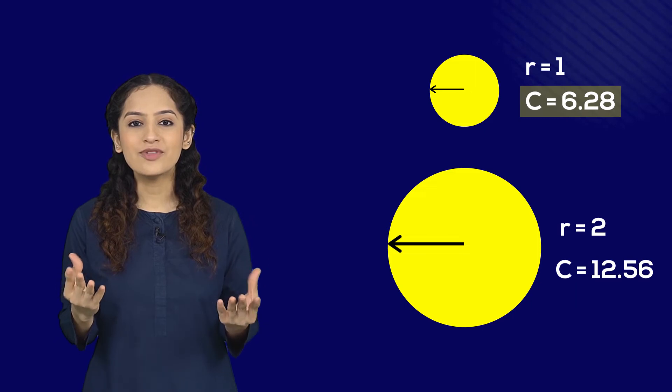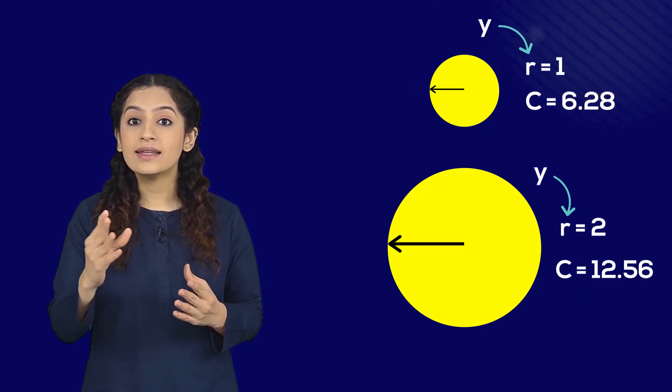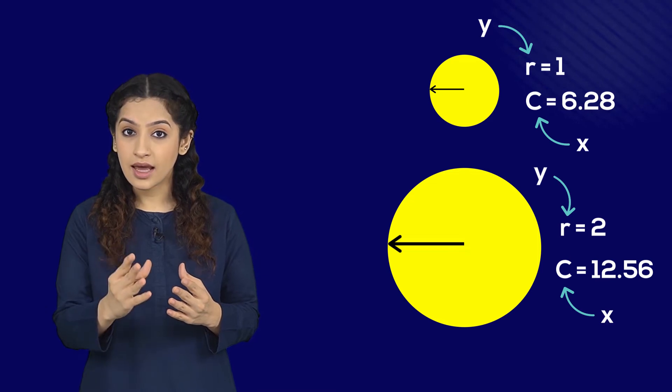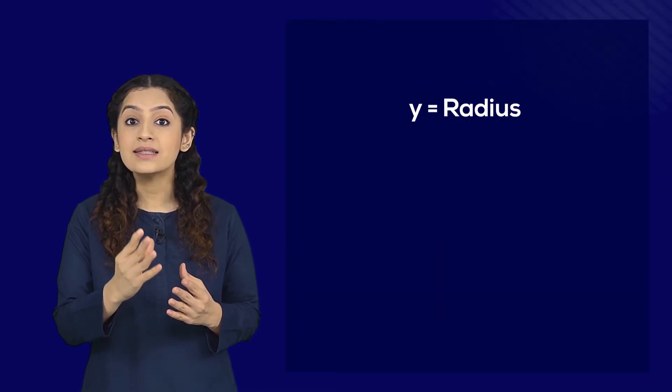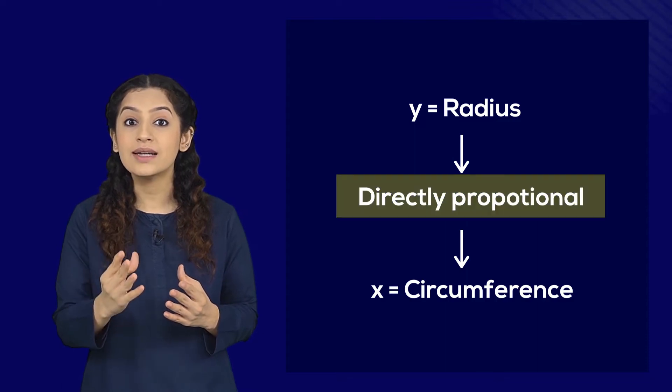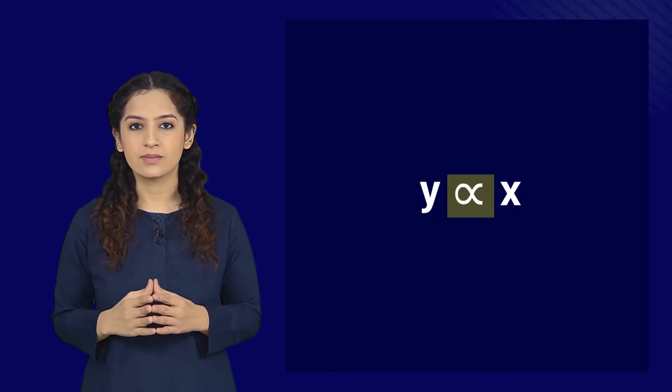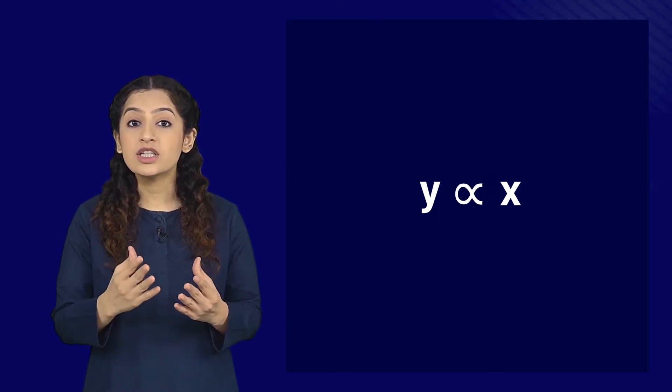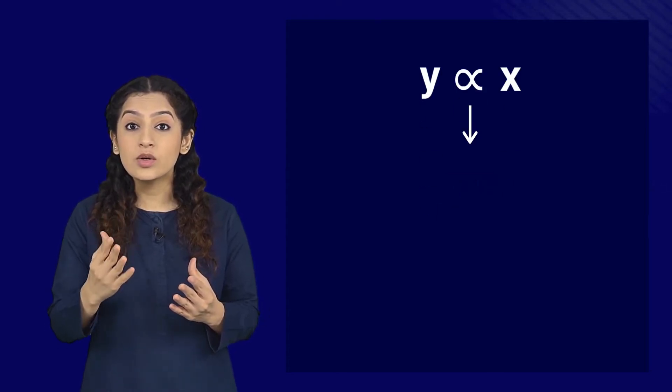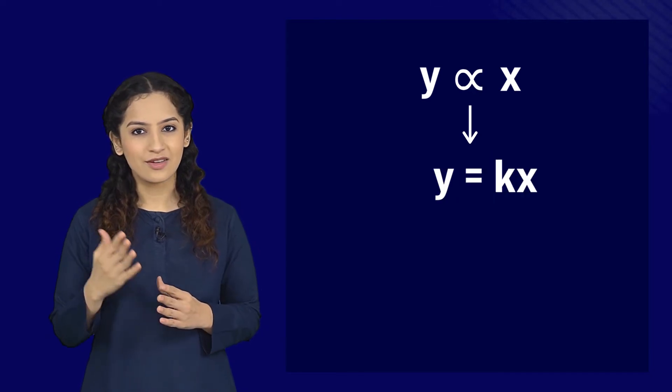Now if one quantity is y and the other is x, then we can say that y is directly proportional to x. To show this mathematically we use this sign which is read as 'varies as.' This variation symbol can be replaced with an equal to sign along with a constant term k.